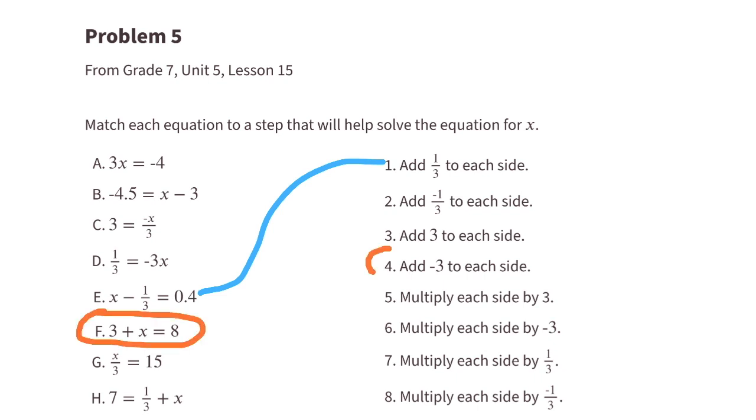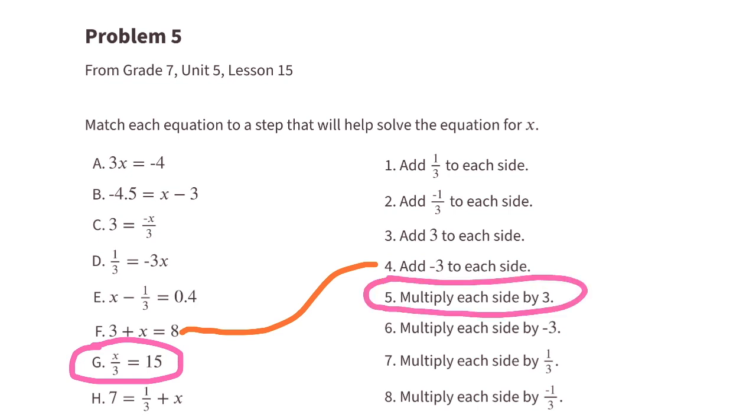For equation F, we need to add negative 3 to each side, or subtract 3 from each side, so that we'll have X all by itself. For equation G, we need to multiply both sides by 3 so we'll have X all by itself.